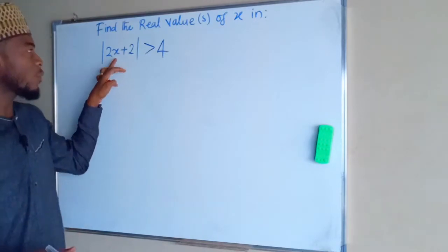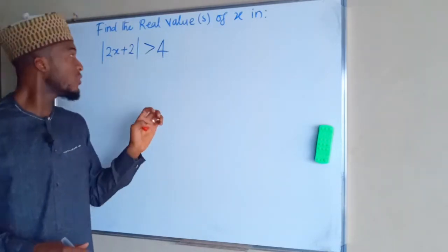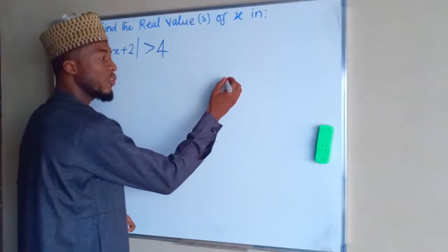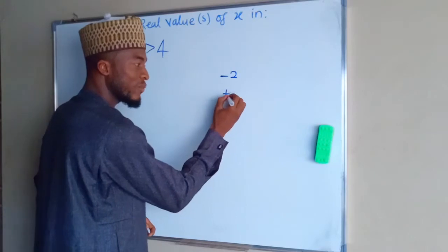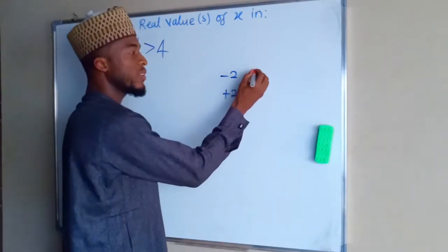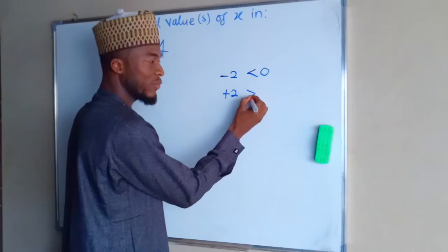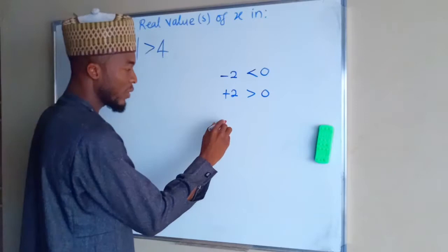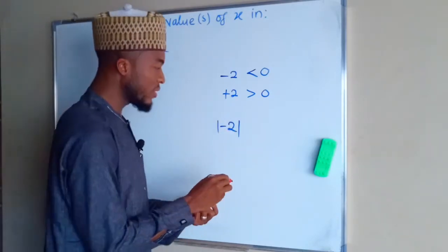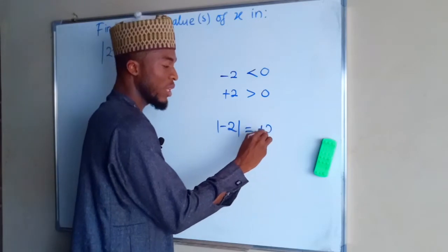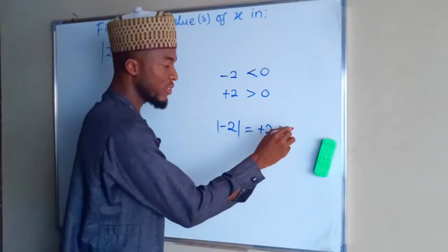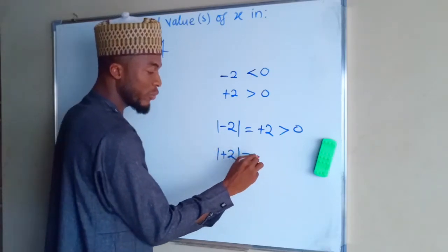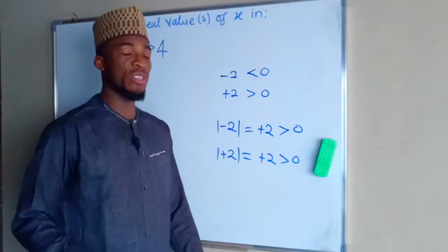The expression on the left hand side consists of an unknown variable which could be a positive number or a negative number. First we have a negative number, negative two, and a positive number, positive two. Negative two is less than zero while positive two is greater than zero. What absolute value does to these numbers: for negative two, it changes it into positive two, which is greater than zero. And positive two will remain positive and is also greater than zero.